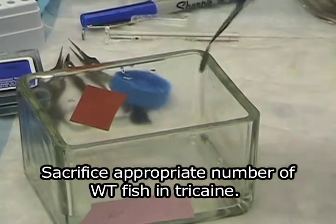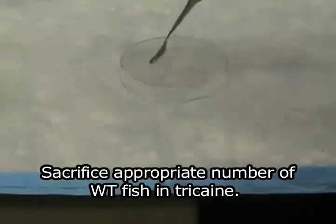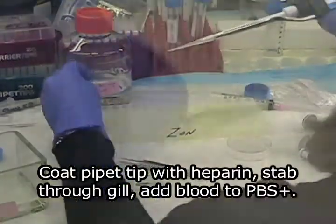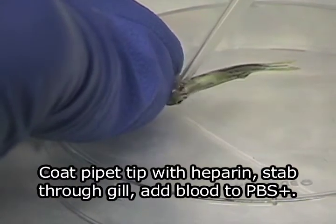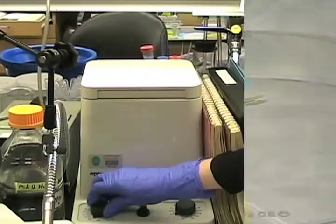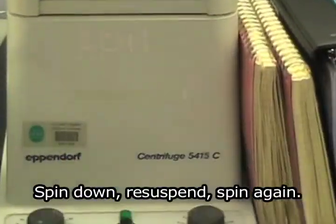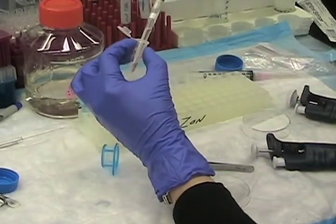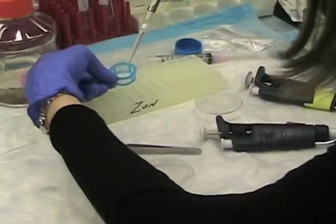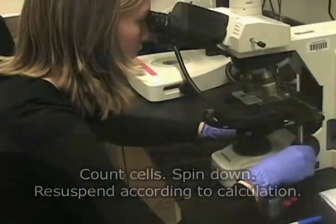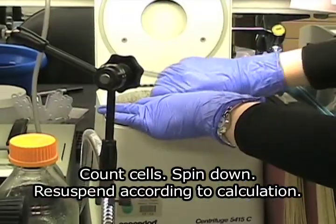Sacrifice fish in tricaine. Coat pipette tip with heparin. Stab through gill with pipette tip. Add blood to PBS solution. Spin down. Resuspend. Spin down again. Filter through 40 micron filter. Count cells as with the whole kidney marrow.